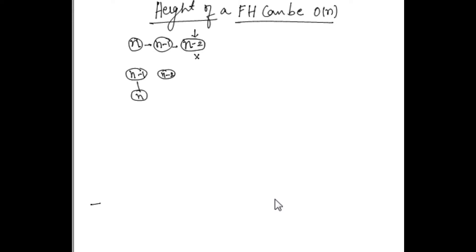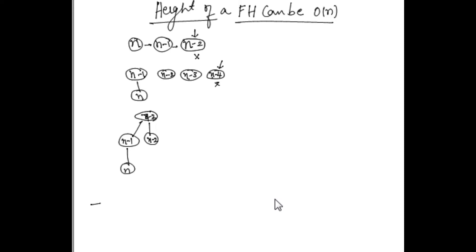Now we can again add n minus 2, n minus 3, and n minus 4. Now the minimum is n minus 4. When we delete this and consolidation happens, n minus 3 becomes the root, and n minus 3 is merged with n minus 2. There is another tree with rank 1 which is n minus 1 and n. This tree becomes the left child of n minus 1, since n minus 3 is smaller than n minus 1. So the height of this tree has now increased by 1.